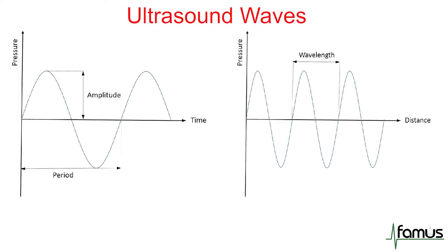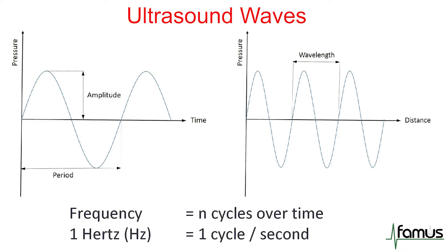Ultrasound waves are similar to sound waves. If you plot an ultrasound wave over time and measure the pressure, you can see the amplitude of an ultrasound wave, and one full cycle is called a period. If we plot the ultrasound wave over distance, then one full cycle is called wavelength. Frequency is defined as the amount of cycles over time, and one hertz is one cycle per second.